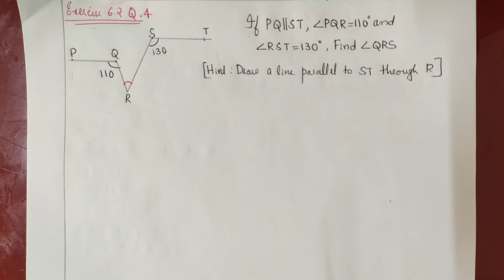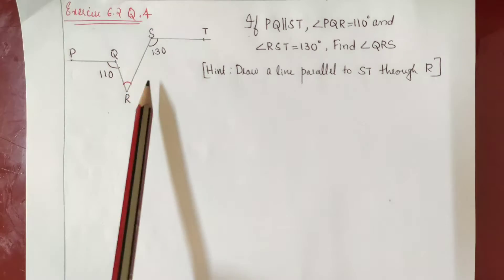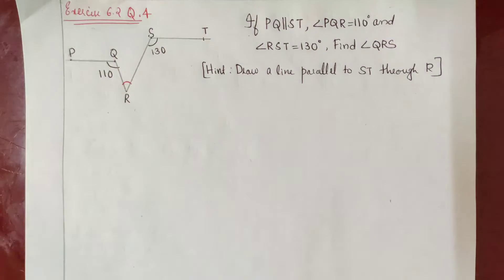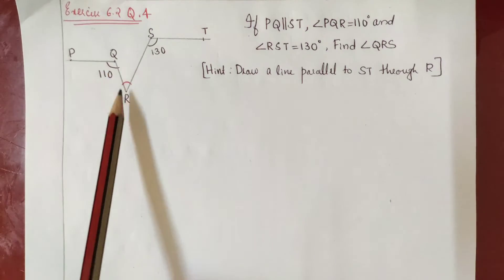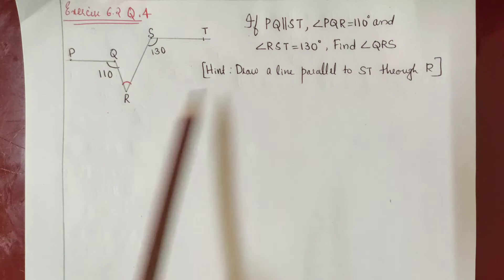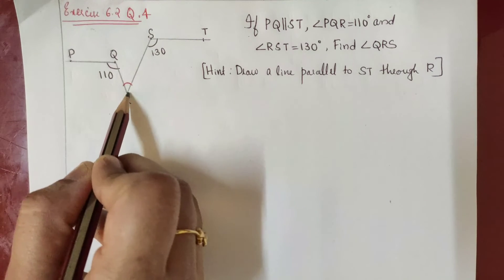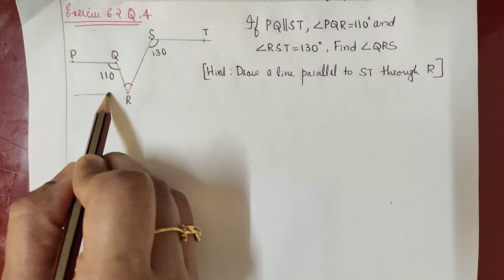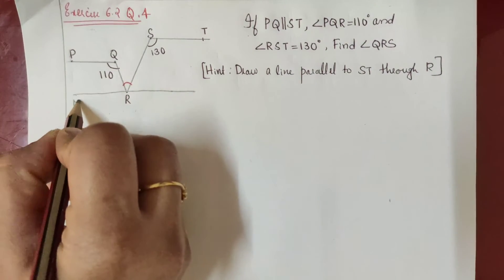As a hint, draw a line parallel to ST through the point R. So in this figure, it is given angle PQR is equal to 110 and angle RST is equal to 130, and we have to find the angle QRS marked in red. Let us draw a line through point R parallel to ST — let it be MN.